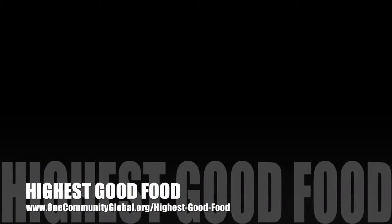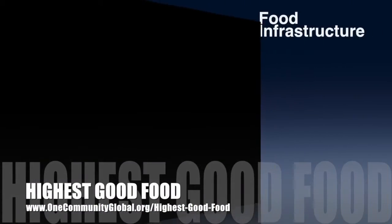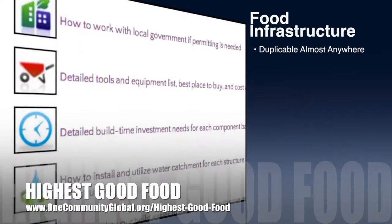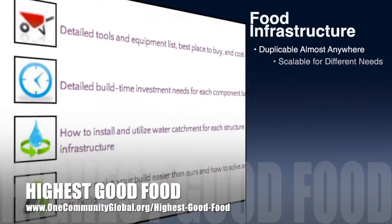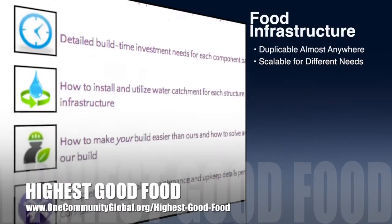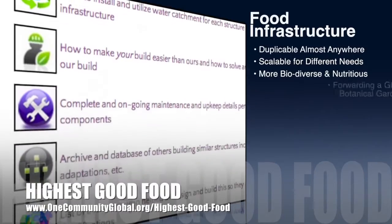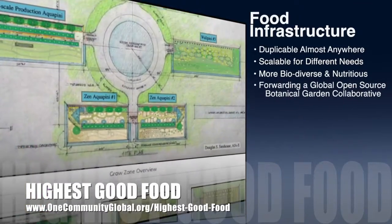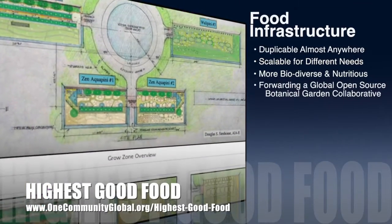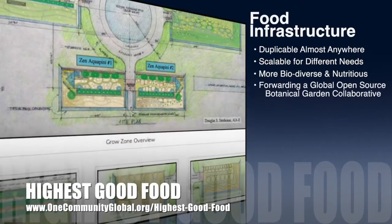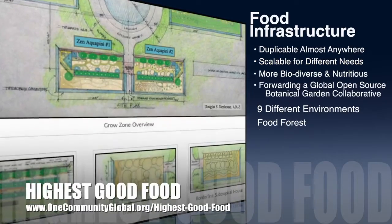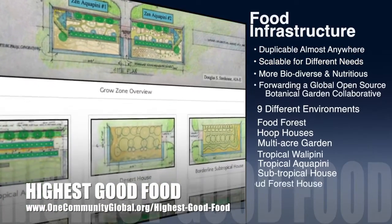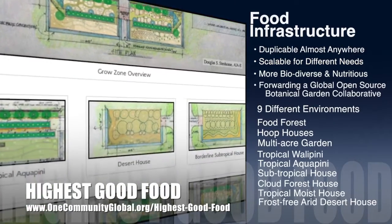One Community's approach to highest good food is duplicable almost anywhere, scalable for different needs, more biodiverse and nutritious, part of forwarding a global open source botanical garden collaborative, and includes nine different free shared and duplicable growing environments.